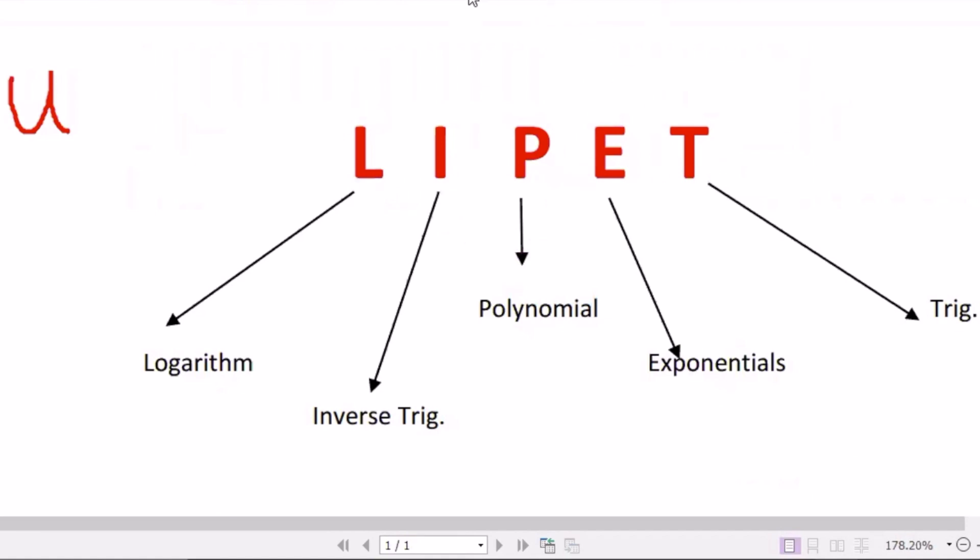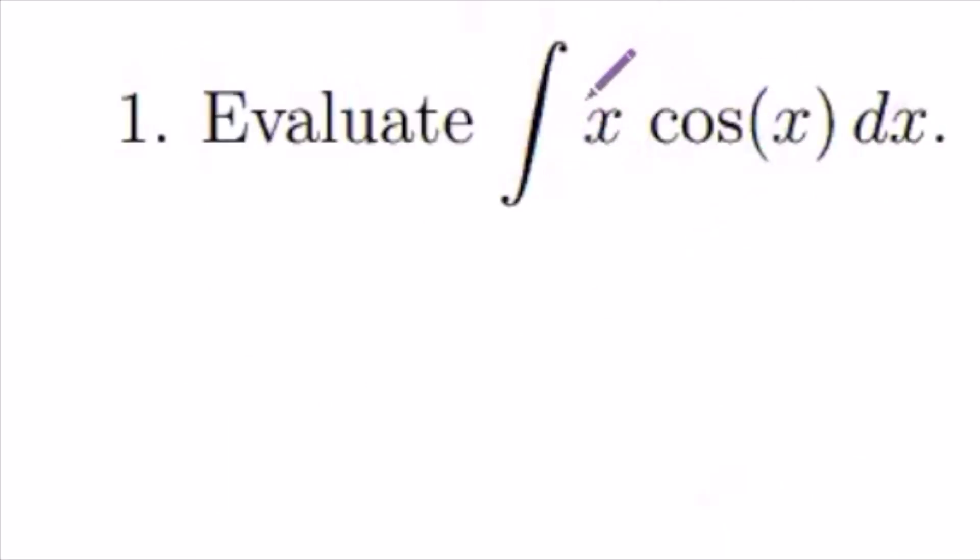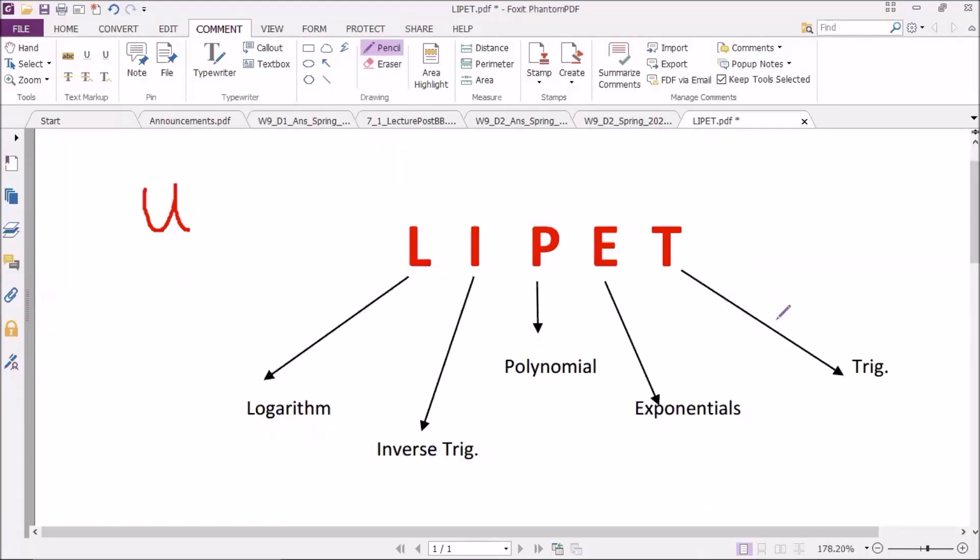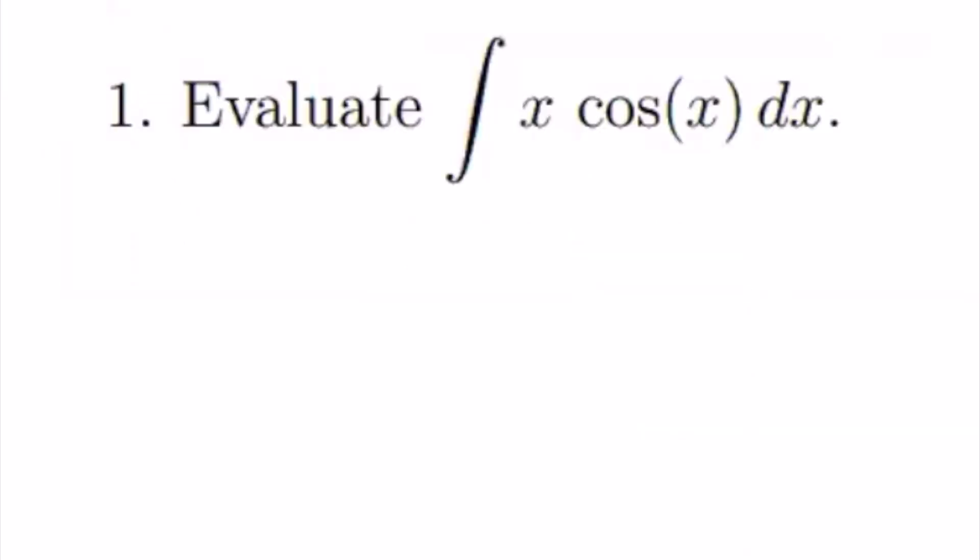In our question, x can be considered as a polynomial and cosine is a trig function. We have polynomial and trig function. In that case, polynomial comes before trig function, so we can select polynomial as u. My u equals x. So I select the polynomial as u.